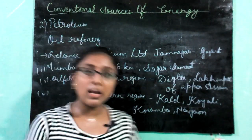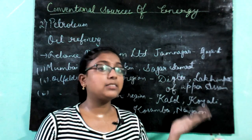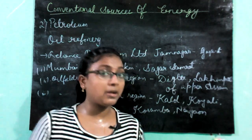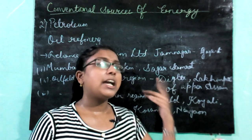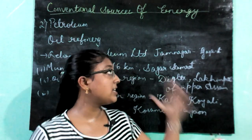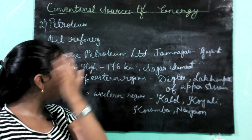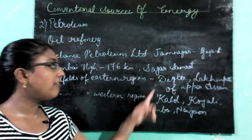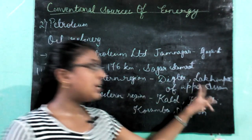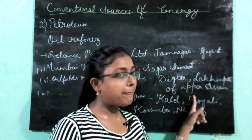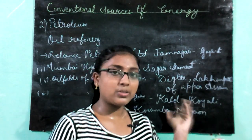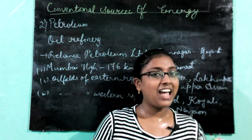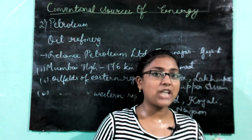So, we have discussed all about petroleum: what petroleum is, the two words it comes from — petra and oleum — its advantages, disadvantages, and various oil refineries. The biggest oil refinery is Digboi, present in Lakhimpur of Upper Assam. Thank you for watching till the end, and don't forget to subscribe to my channel.